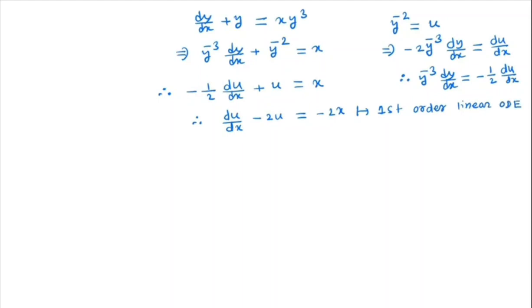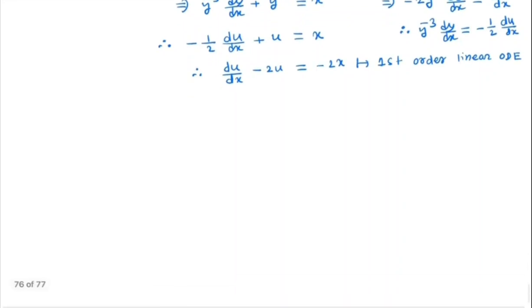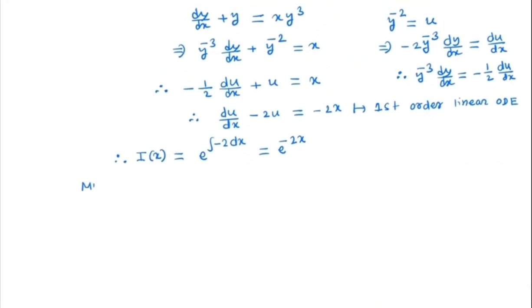We solve this kind of equation by the integrating factor method — I have already made a video on that, you can check it in the description box. In this kind of problem, we first find the integrating factor, which is e to the power of the coefficient of u, that is minus 2, integrated with respect to x — so it is e to the power minus 2x.